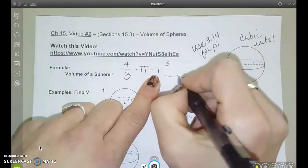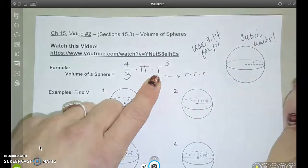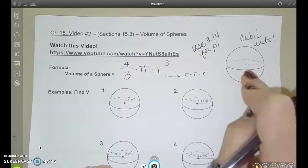Let's remember that radius cubed is radius times itself three times. So all you need to find the volume of any sphere is just the radius.